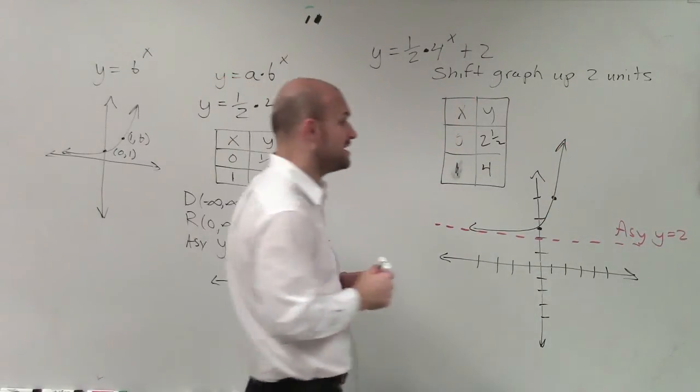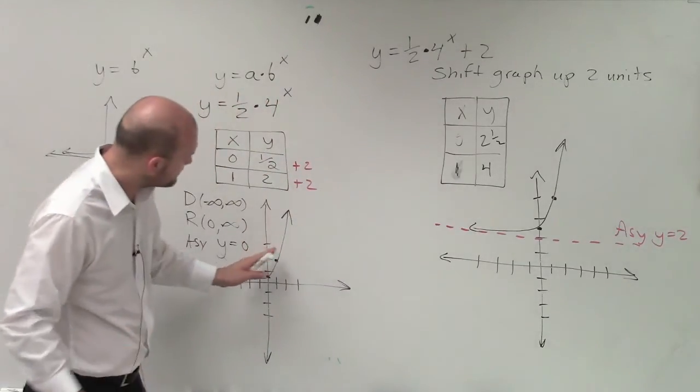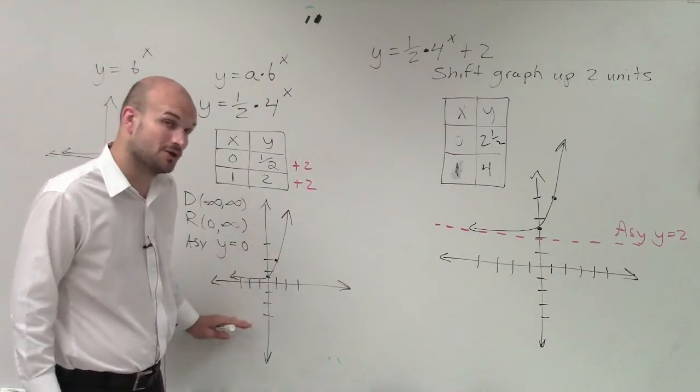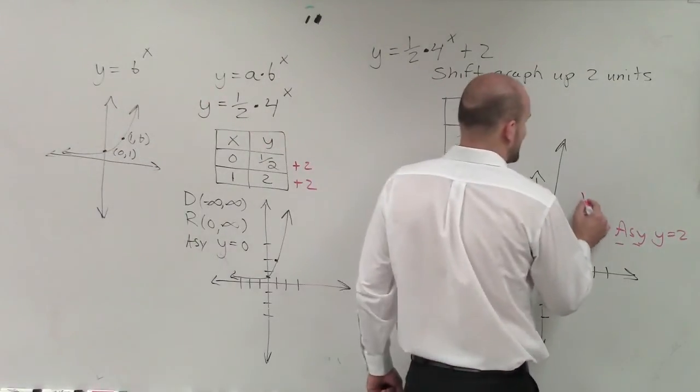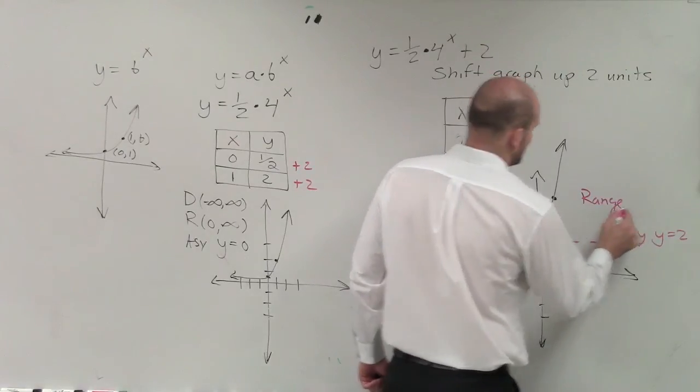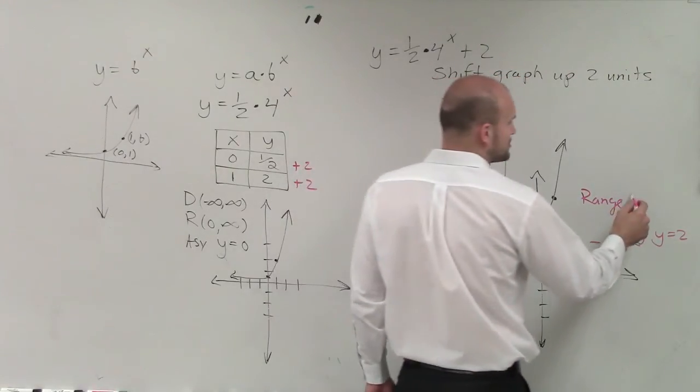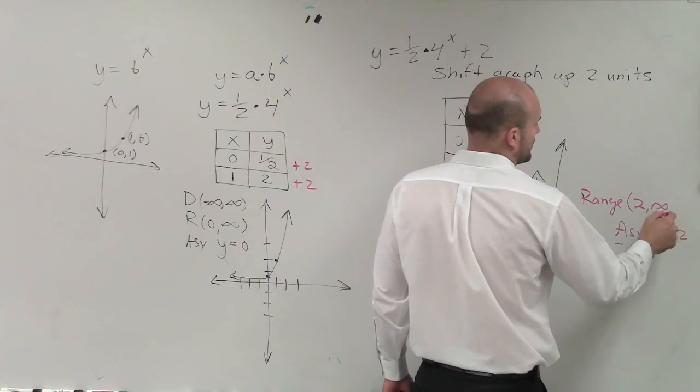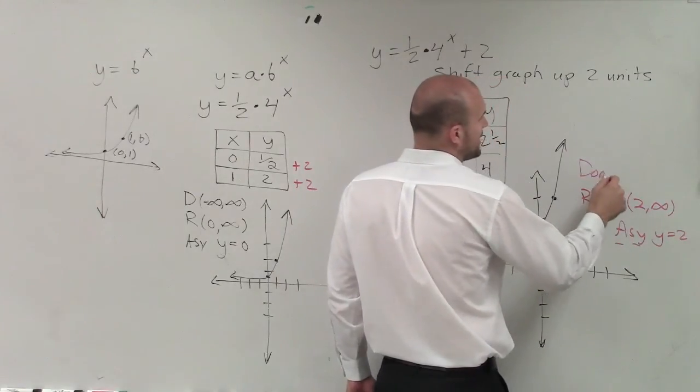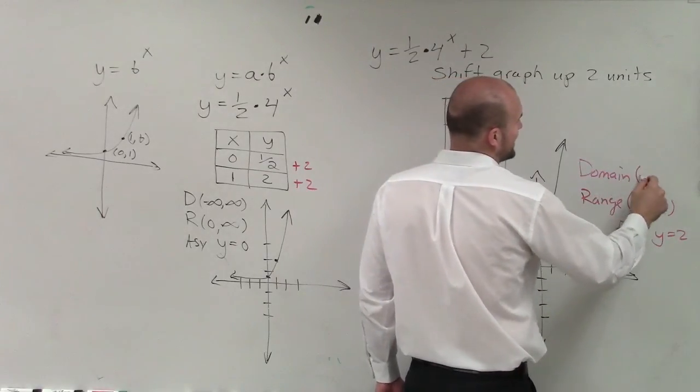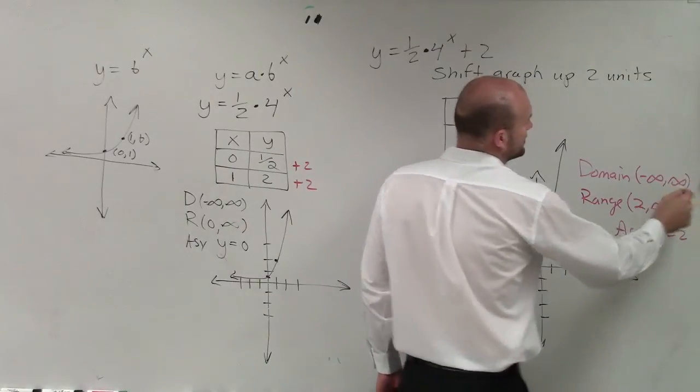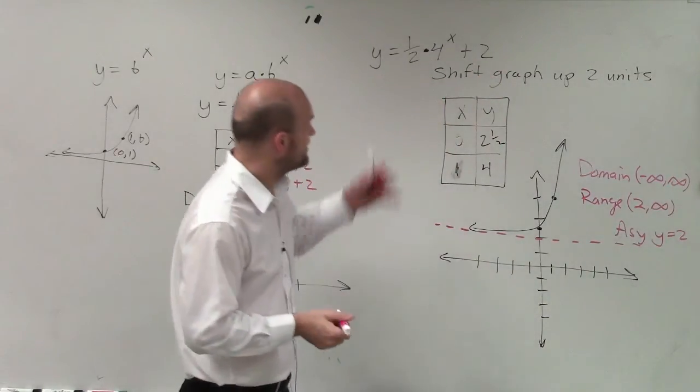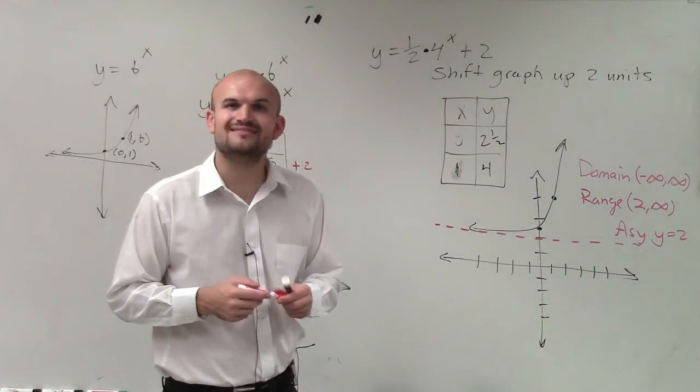All right. And that's also going to affect my range, whereas now here, you notice that my values of my graph do not go below 0. But here, my range, they don't go below 0, but they also don't go below positive 2. So my range is from 2 to infinity, but my domain is non-affected, and my domain is from negative infinity to infinity. So there you go, ladies and gentlemen. That is how you graph an exponential function. Thanks.